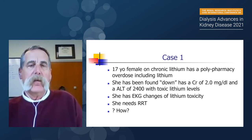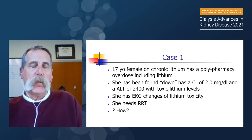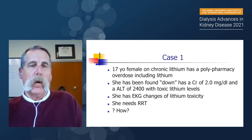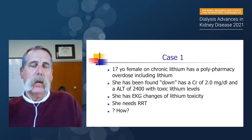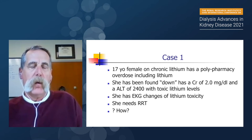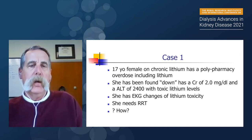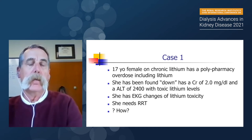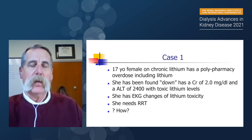Let me move to cases, because let's go to the practical. I'm going to present three different cases — patients that all of us have seen that I've taken care of, and that we all need to learn from. Case number one: a 17-year-old female who had a polypharmacy overdose including lithium. She was found obtunded. She had impaired creatinine — about 30–40% GFR — and liver function dysfunction. We know that renal function and liver are important for drug clearance. She had EKG changes compatible with lithium toxicity and needs removal.